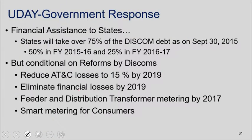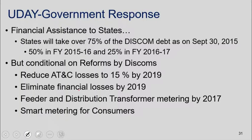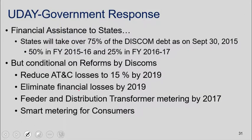In response to the problem of DISCOM losses, about a year and a half ago the government started a new scheme called UDAY. Basically what happened in UDAY is that states took over the DISCOM debt, progressively issuing bonds instead, so the DISCOMs now have less debt. This is a kind of relief for them, but the relief is conditional on certain reforms: the DISCOMs have to reduce AT&C losses and do more metering, because we can't have the same thing again — taking over debt with no reforms.